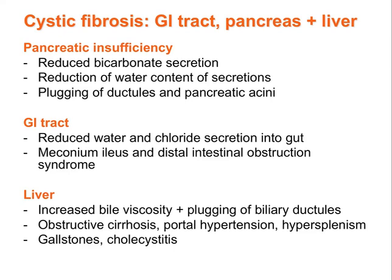In the liver, reduced CFTR function in epithelial cells of the biliary tract increases bile viscosity and plugging of the biliary ductules. Obstructive cirrhosis, portal hypertension, and hypersplenism can also occur. Gallstones and cholecystitis are more common in cystic fibrosis.